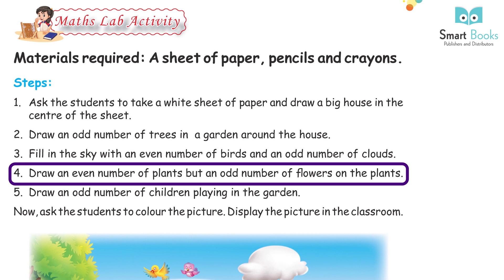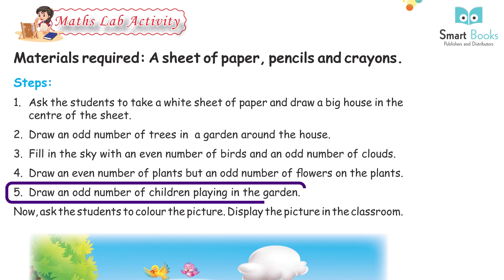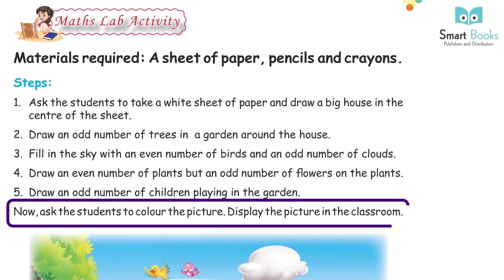Three — fill in the sky with an even number of birds and an odd number of clouds. Four — draw an even number of plants but an odd number of flowers on the plants. Five — draw an odd number of children playing in the garden. Now ask the students to color the picture and display it in the classroom.